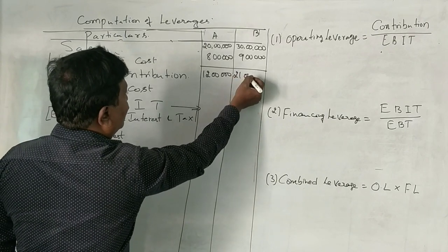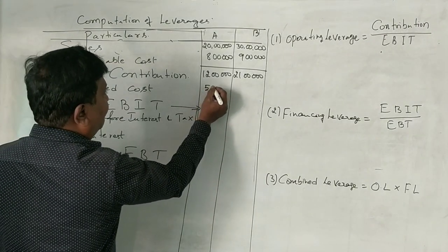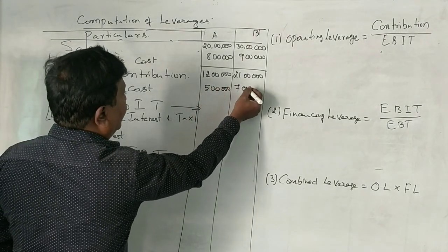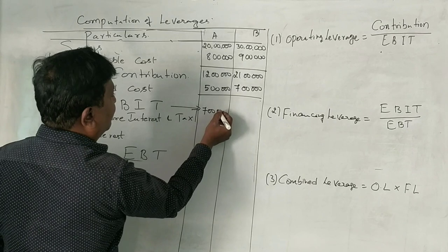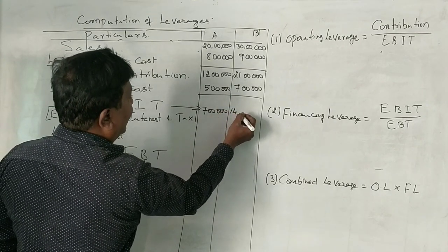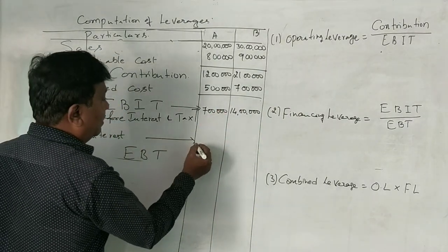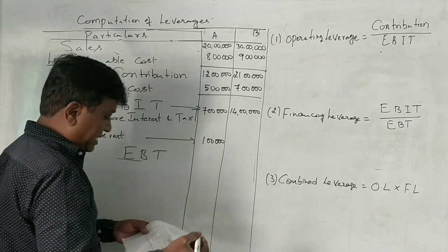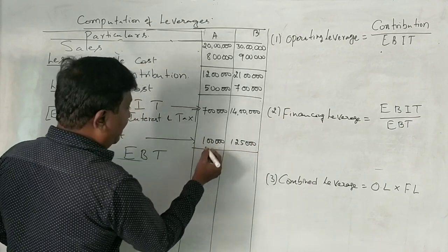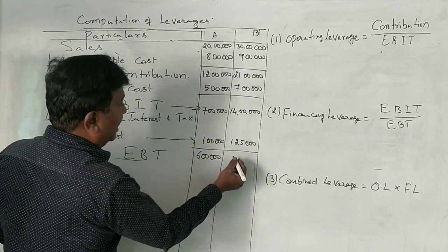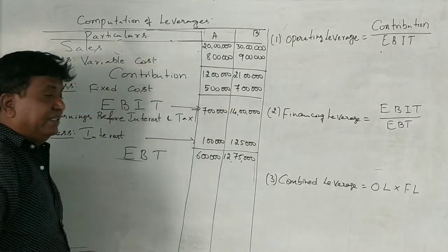Here 21 lakhs as contribution and fixed cost is interest here. Here we are given 5 lakhs in A firm and 7 lakhs in firm B. We get EBIT as 7 lakhs for firm A and 14 lakhs for firm B and interest is also given 1 lakh in firm A and 1 lakh 25,000 in firm B. Now EBT is 6 lakh rupees and 12,75,000 rupees. This is the EBT.